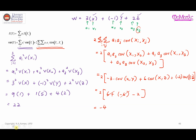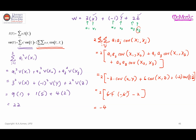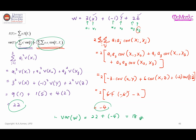So the second part gives us negative 4. Therefore, the variance of W equals 22 plus negative 4, which equals 18. Thank you very much for watching, and I'll see you in the next video.